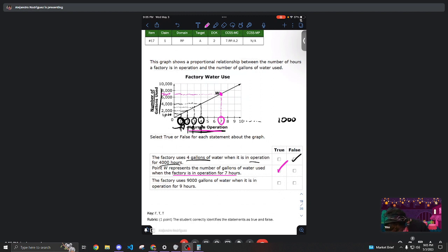Finally, the last question says: the factory will use nine thousand gallons of water when it is in operation for nine hours. Well, if I look at my graph, if the plant is on for nine hours, I'm gonna be using about nine thousand gallons of water.